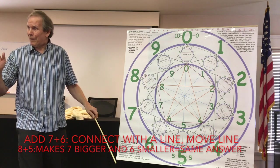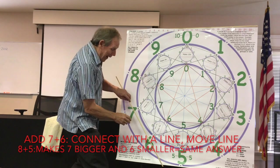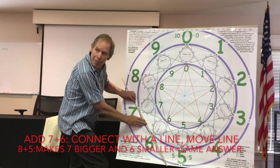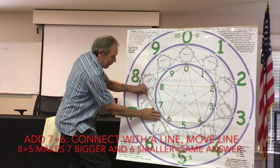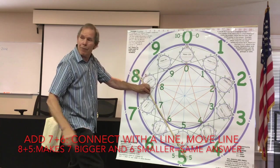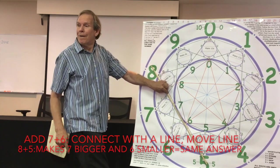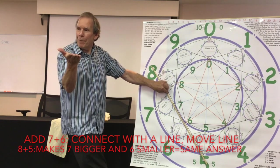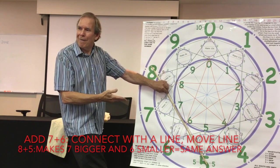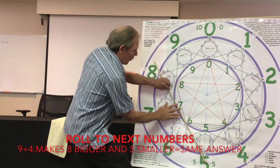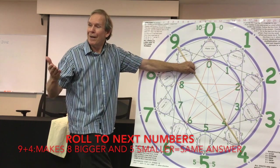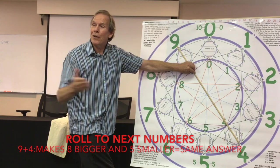So, I'll show you the number wheel, I'll show you at least one pattern here with this. If you add 7 and 6, you connect them with a line. You roll this up to 8-5, that's one number bigger and one number smaller. If it's one number bigger, one number smaller, one number bigger, one number smaller, it has to add to the same thing.